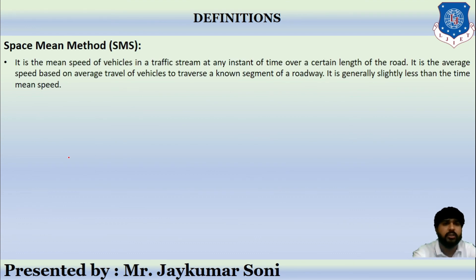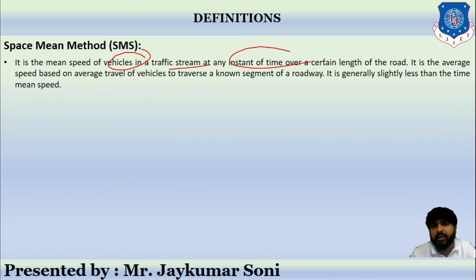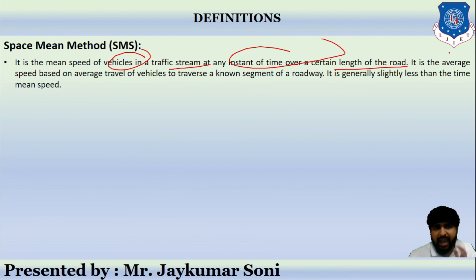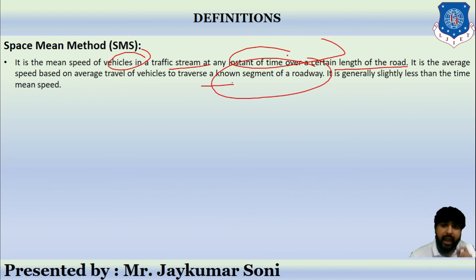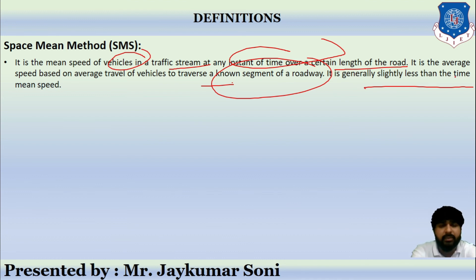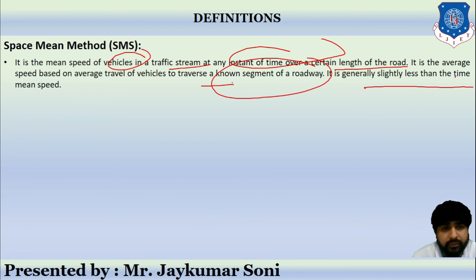Space mean speed is the mean speed of vehicles in the traffic stream at any instant of time over a certain length of road. It is the average speed based on average travel of vehicles over a known segment of roadway, and it is generally slightly less than time mean speed. This concludes this session's discussion; the remaining topics will be covered in the next session.